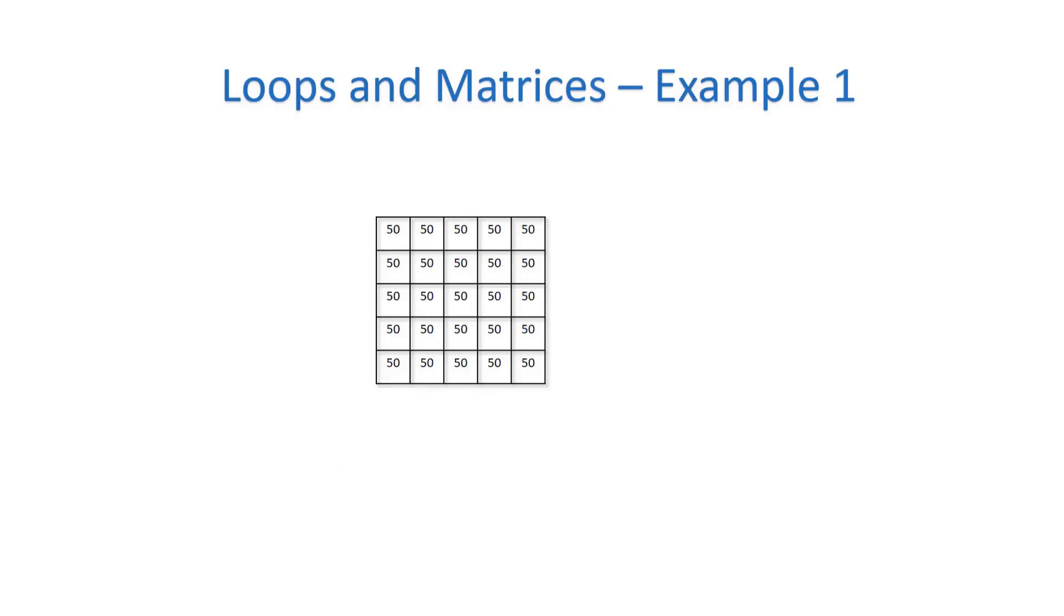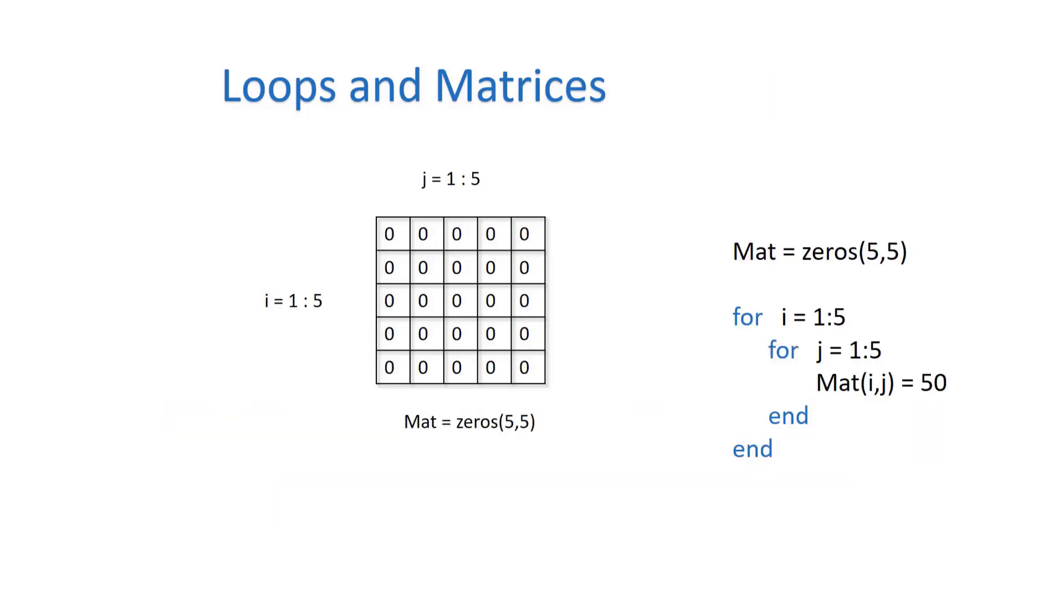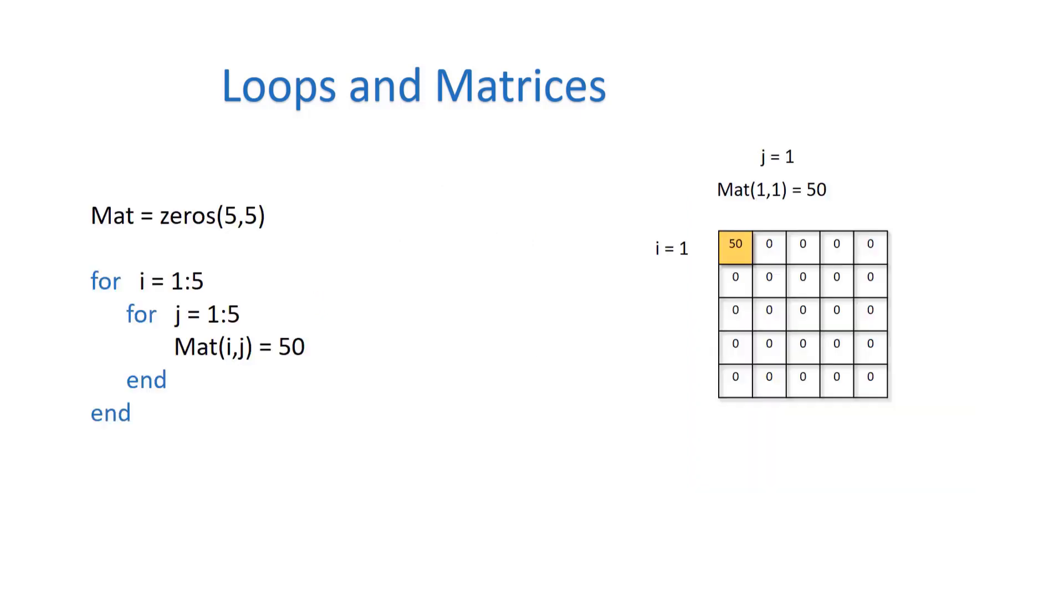Let's look at this task of creating a 5 by 5 matrix full of 50s using for loops. If you look at the program, you're pre-allocating the matrix size to a 5 by 5 with zeros, and then you're starting with for i equals 1 colon 5 and j equals 1 colon 5.